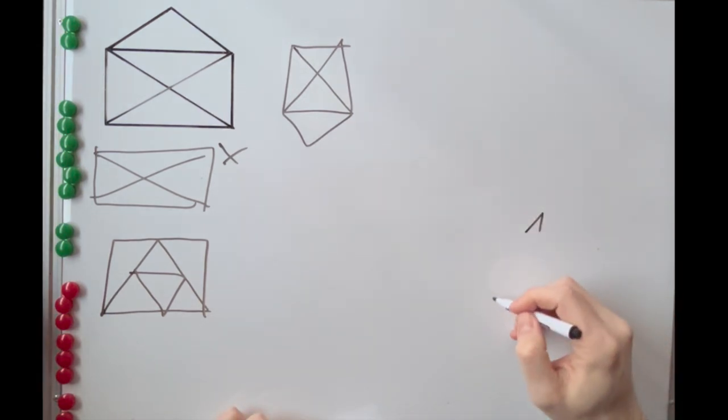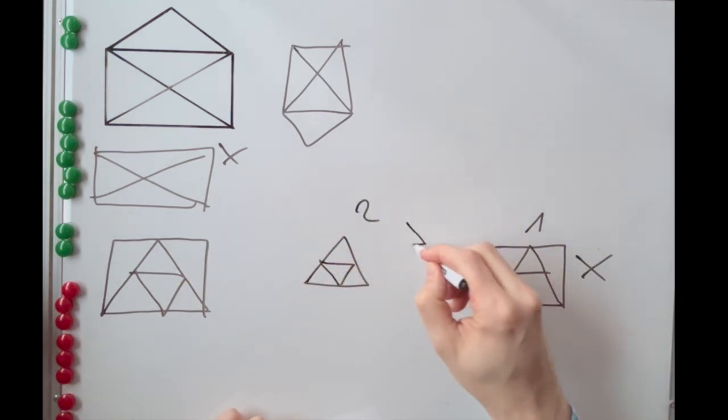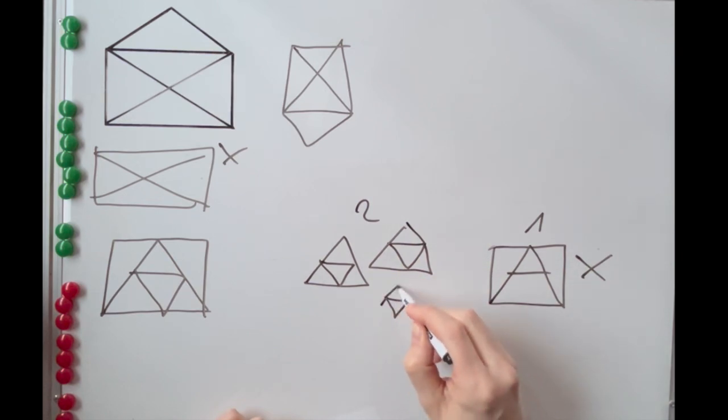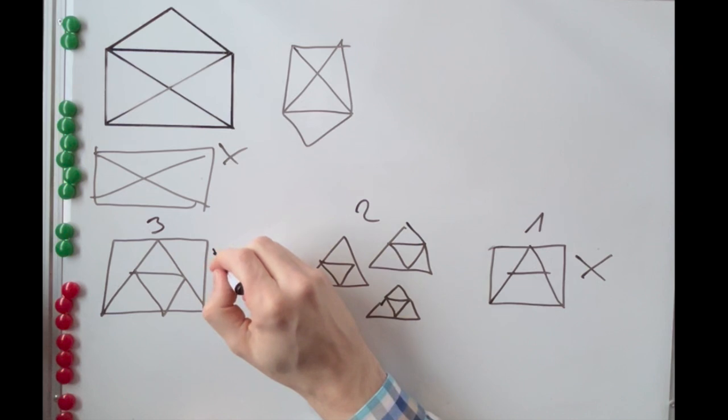There are three types of shapes in this task. Shapes that cannot be drawn this way. Shapes that can be drawn starting from any node or any point of the shape. And shapes that can be drawn, but require starting and ending in a specific node.